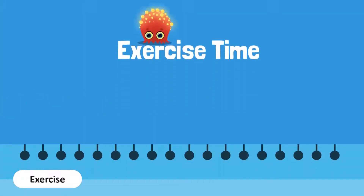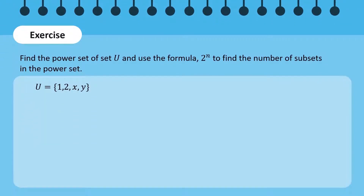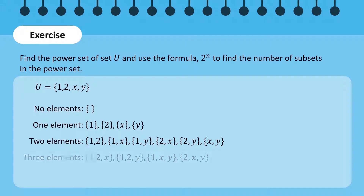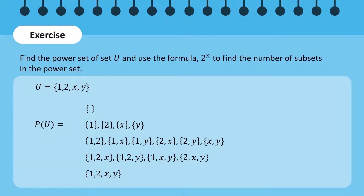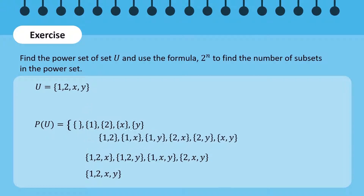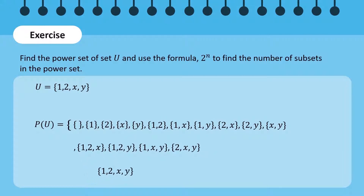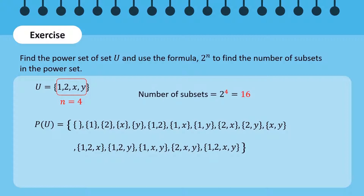Let's do an exercise. Find the power set of set U and use the formula to find the number of subsets in the power set. The elements of set U are 1, 2, x, and y. Therefore, the subsets of U are the null set, four sets with one element in them, six sets with two elements in them, four sets with three elements in them, and one set with four elements in it. These subsets make up all of the elements of the power set of set U. To find the number of subsets in the power set, observe that there are four elements in set U. The number of subsets is then given by 2 to the power of 4, which is 16. We check our answer by counting the number of subsets in the power set, which is indeed 16.